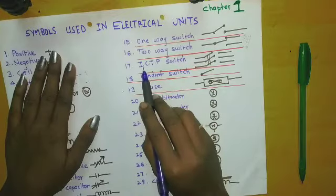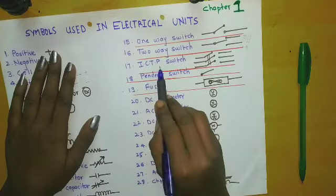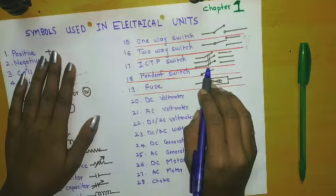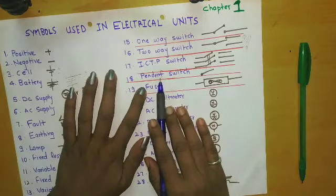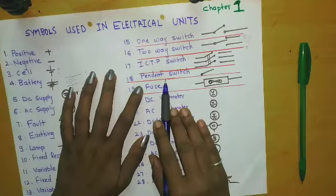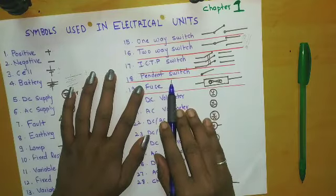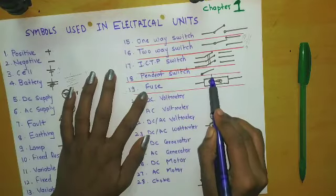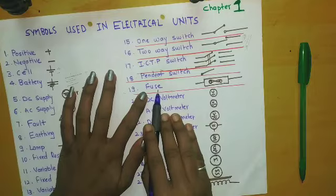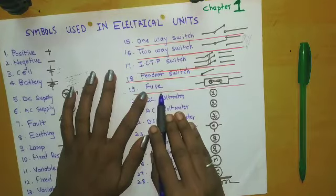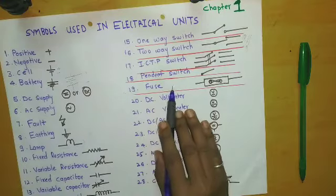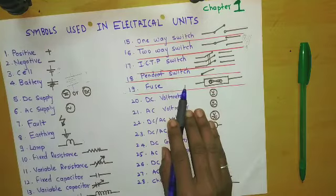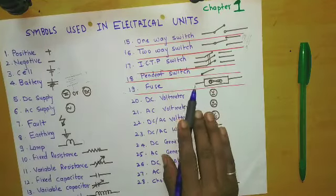ICTP switch — this is the Iron Clay Triple Pole switch. It is a three-fuse arrangement and is basically used where three phase is required. Pendant switch — this switch is used to control lamps or other devices that are mounted overhead beyond the reach of a person, and this is the symbol of a pendant switch. This is a fuse. A fuse is used to protect against overcurrent flow. The main component of a fuse is a metal wire which melts when overcurrent flows through it, so it is simply a safety device.